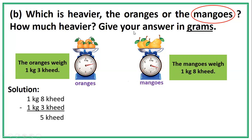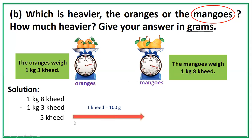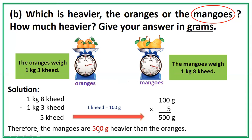The problem says to give the answer in grams, so we need to convert 5 hecto to grams. Since 1 hecto equals 100 grams, 5 hecto equals 100 grams times 5, which is 500 grams. Therefore, the mangoes are 500 grams heavier than the oranges.